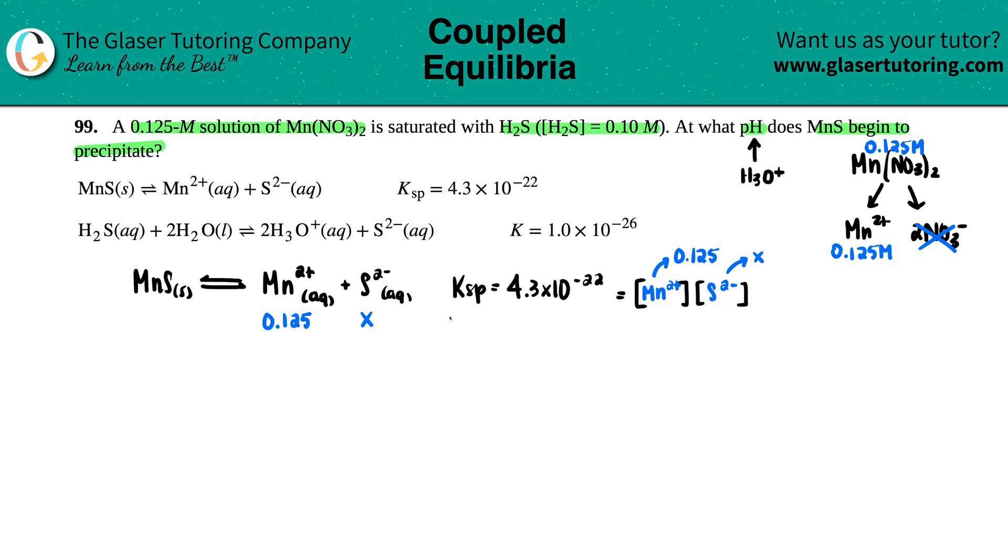So let's see. 4.3 times 10 to the negative 22nd equals 0.125 times X.